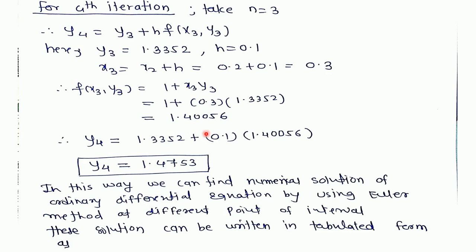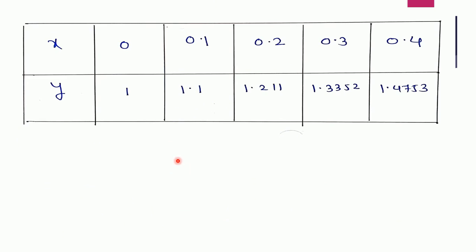In this way we can find the numerical solutions of the differential equation using the Euler method at different points on the interval. The solutions can be written in tabulated form: at x = 0.0, y = 1.0 (initial condition); at x = 0.1, y = 1.1; at x = 0.2, y = 1.211; at x = 0.3, y = 1.3352; and at x = 0.4, y = 1.4753.